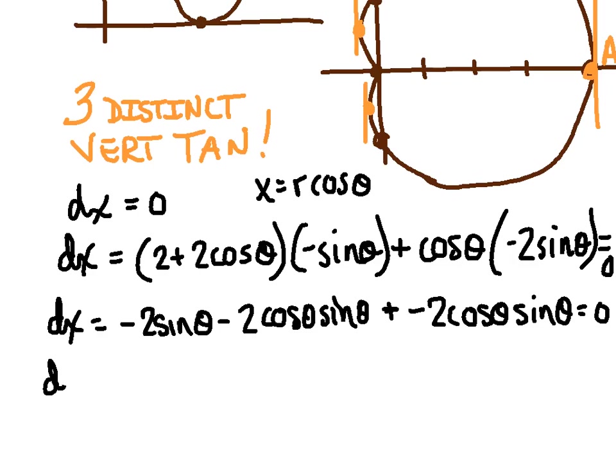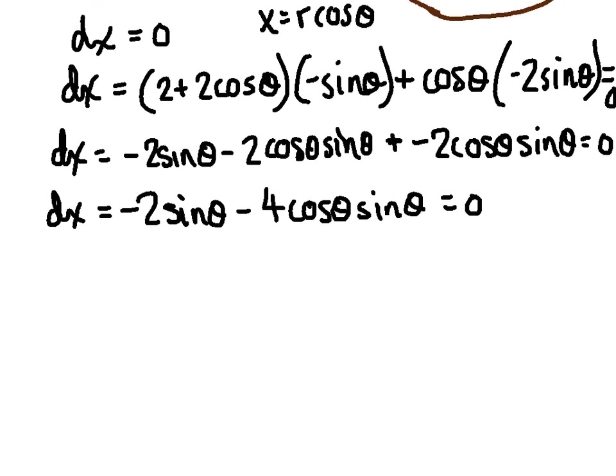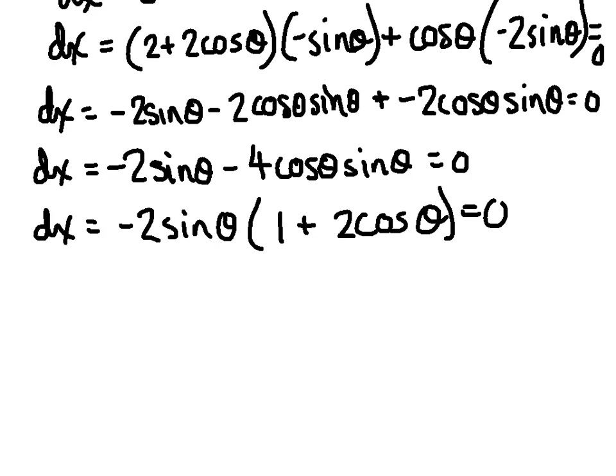Again, those could be in any order. And then minus 2 cosine of theta sine of theta. Set it equal to 0. Let's combine some like terms. We know that the second and third term are like terms. So we now have a grand total of negative 4 cosine theta sine of theta. Now, you may be tempted to throw this one in the calculator as well. But this question is going to show up on the non-calculator half of the exam. And the reason is because we can pull out a beautiful GCF here of negative 2 sine.